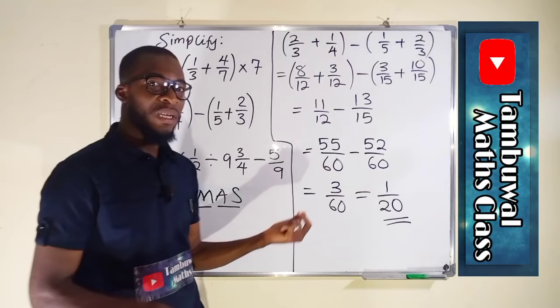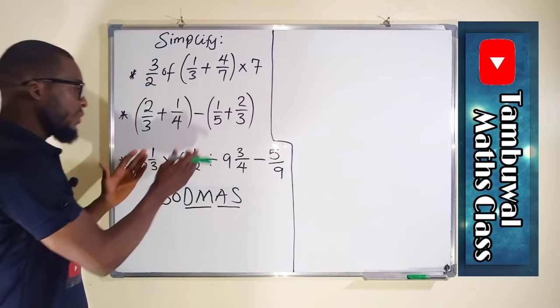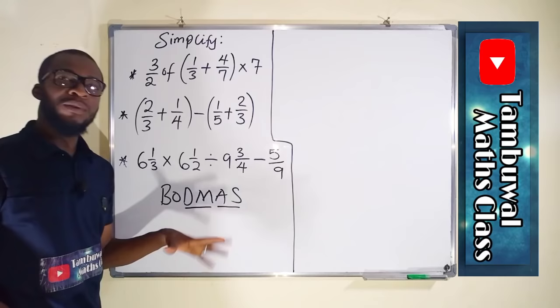Now let us take the last problem. We have a combination of mixed numbers and a fraction. Using the same principle of BODMAS, we start with Bracket — which is absent here — then Orders, also absent, then Division and Multiplication.